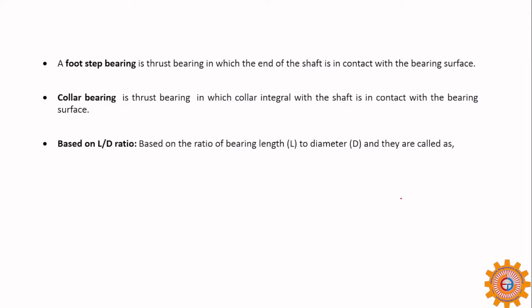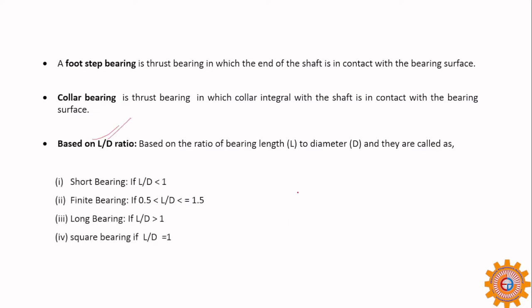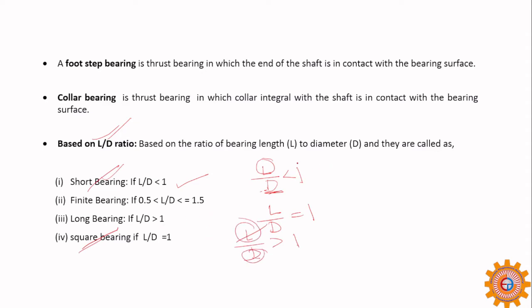Based on the L/D ratio — where L is length and D is diameter of the journal — bearings are divided into several categories. If L/D is less than 1, the length is shorter than the diameter, so it is a short bearing. If L/D equals 1 it is a square bearing. If L/D is greater than 1, L is more than the diameter, and it is called a long bearing.